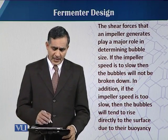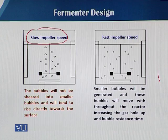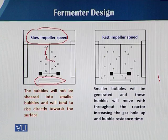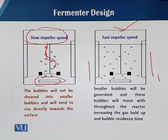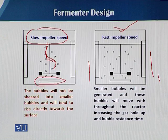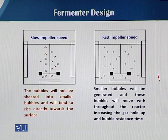In this slide, imagine if the impeller speed is very slow — then the air bubbles, when they exit and ooze out from the sparger, they just pass through and have less time to retain inside the fermentation medium. But when the impeller speed is very high, it facilitates equal and proper distribution of the air bubbles, and each bubble has maximum retaining time inside the fermentation medium.